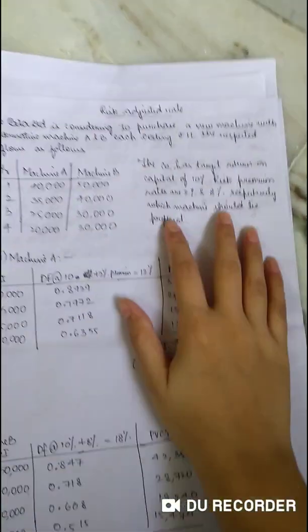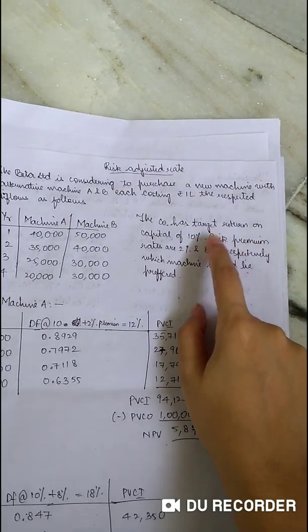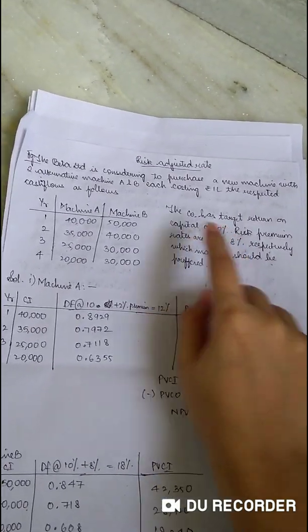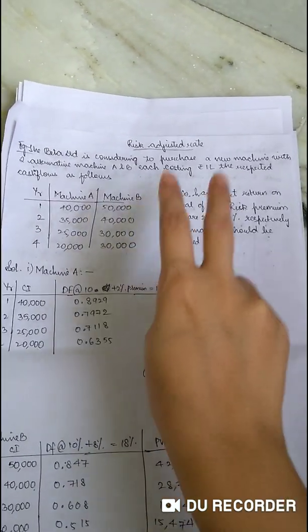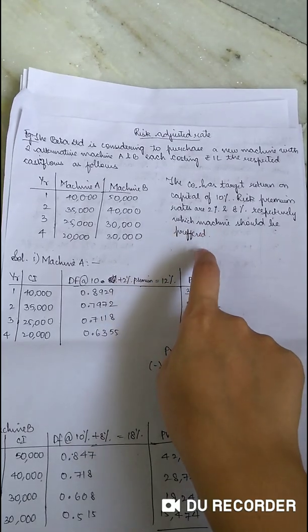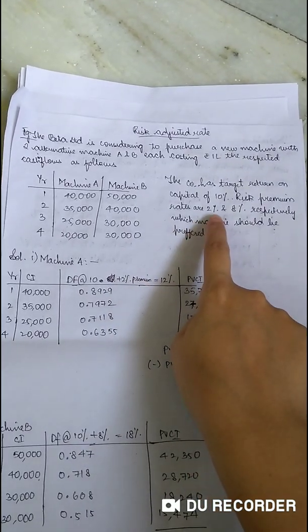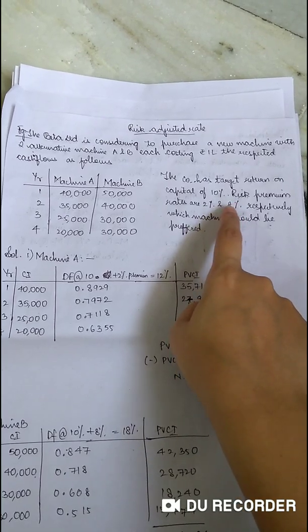Which machine should be preferred? Now I would like to explain this in depth. If you see, the company has target return on capital of 10%, that means for both of them we will be calculating NPV at 10% with a risk premium of 2% and 8%.